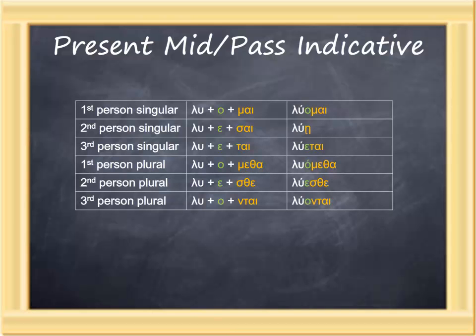And so we have: luomai, I am being destroyed; luei, you singular are being destroyed; luetai, he, she, or it is being destroyed; luometha, we are being destroyed; luesthe, you plural are being destroyed; and luontai, they are being destroyed.